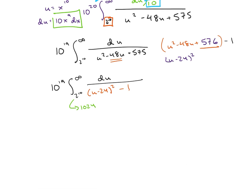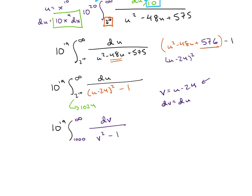So now we have 10 to the 19th, and let's make v equal to u minus 24, so dv equals du. Since we're doing u minus 24, our new lower bound becomes 1024 minus 24, which is 1000, and we go to infinity again. On the inside we now have dv over v squared minus 1.